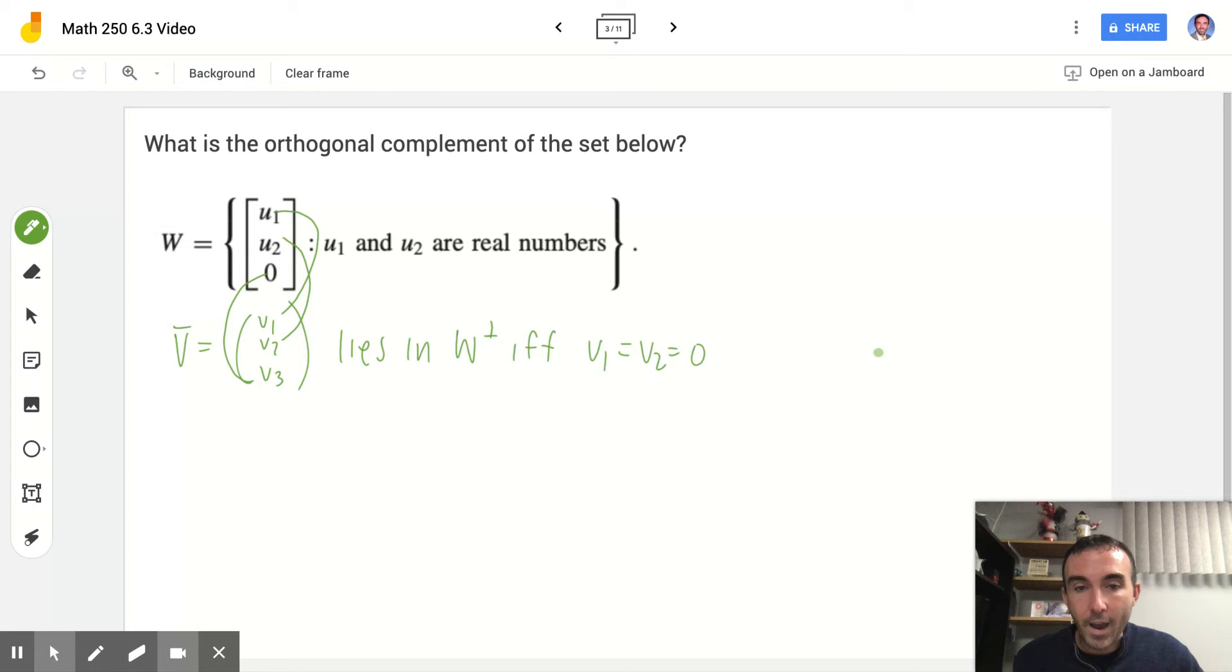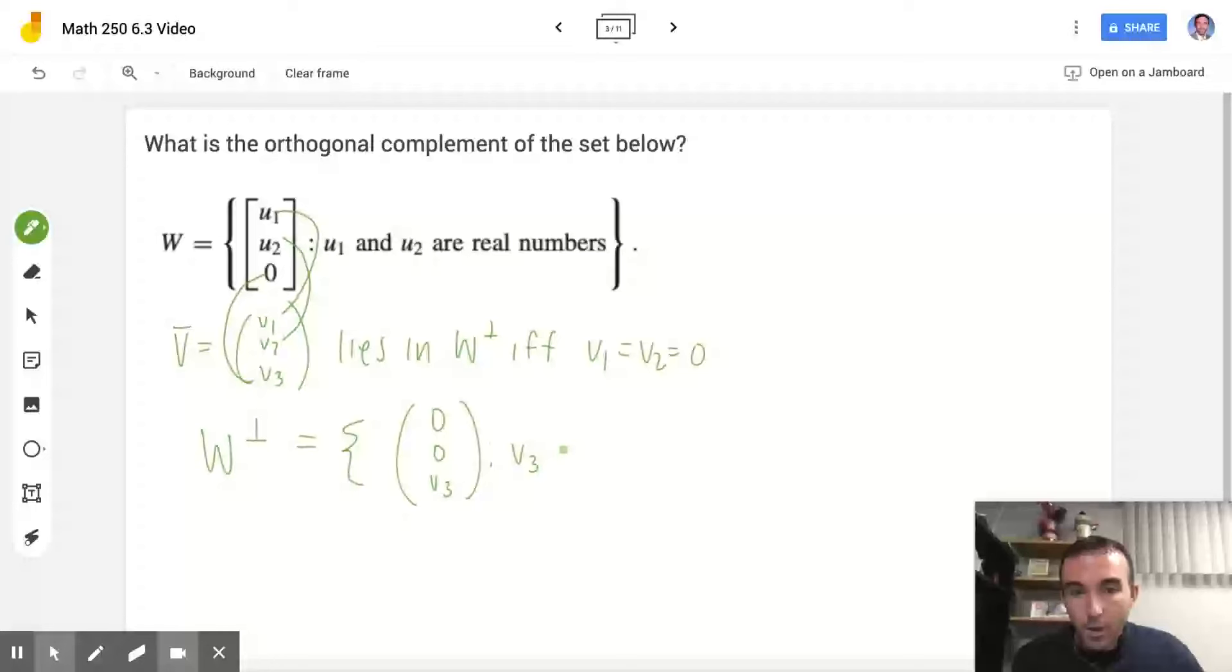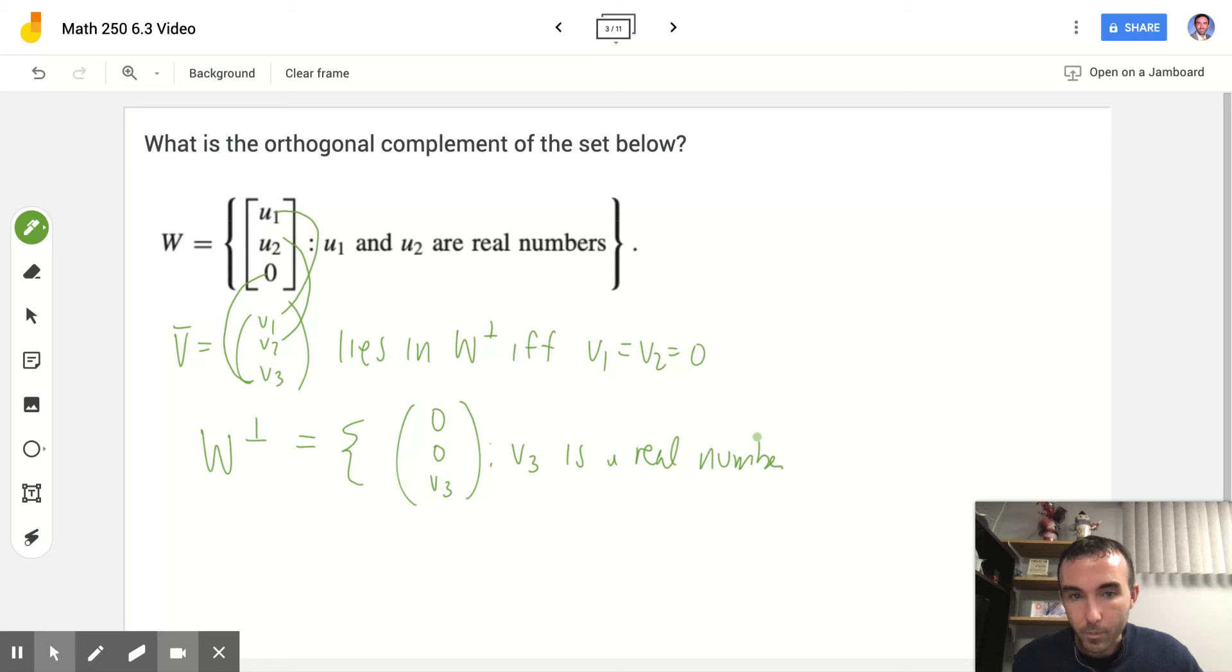So if we want to write that out as a set here, I can write that out as 0, 0, V3, where V3 is a real number. And basically, this is the z-axis. So if I look at it in terms of R^3, my x component is 0, my y component is 0. In the three-dimensional plane, I'm starting at 0, 0, but then V3 would be along the z-axis this way. Whereas here, in the given set, I have an x component and a y component, so I'm flat. I don't have a z component, so I'm not going up into 3D or down into 3D. So I would always be perpendicular no matter what. So that's called an orthogonal complement.